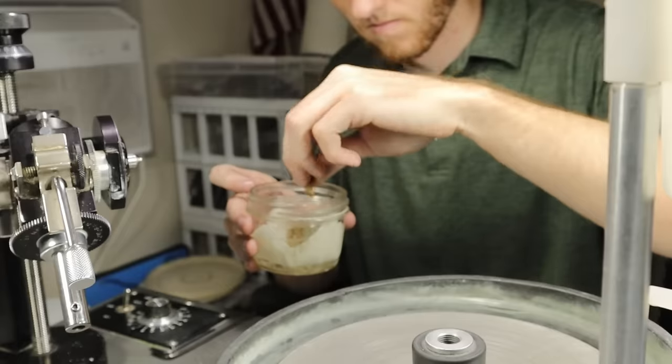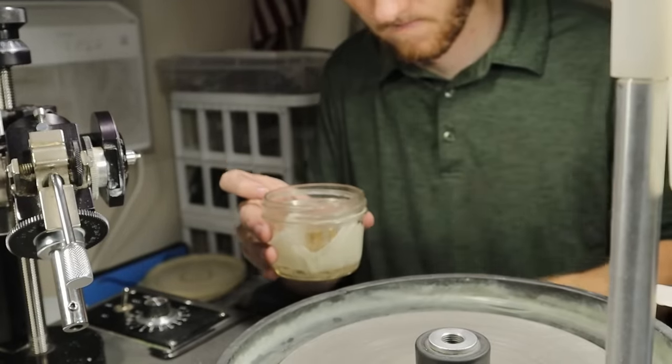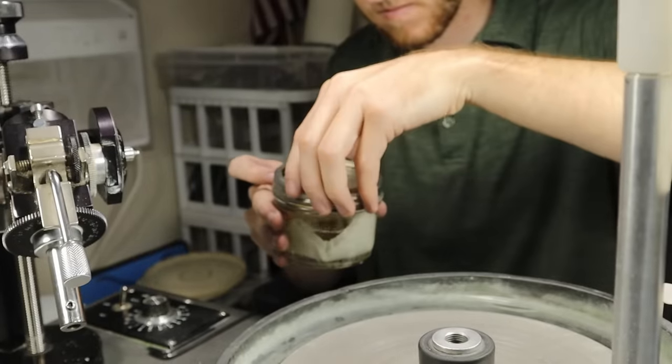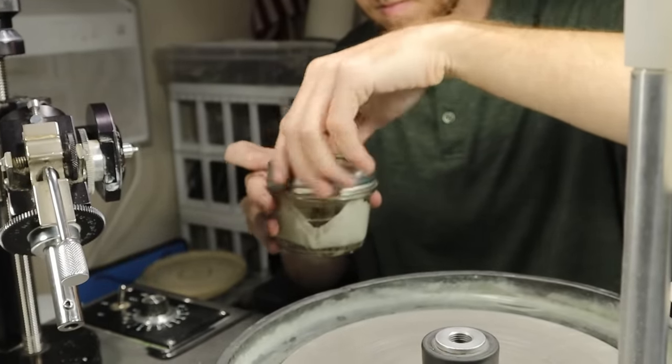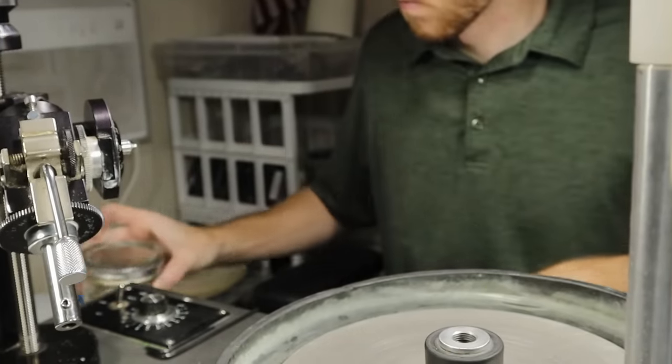Placing the stone in acetone is the safest way to dissolve the glue and remove the stone from the dop without damaging the stone. I don't recommend heating off the finished stone when it is adhered with super glue.